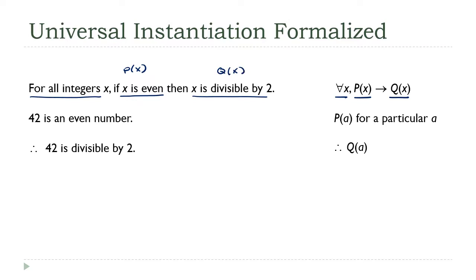Now, in the second line, we need to reference a specific value. So, if we call that a, I can rewrite this as p of a for a particular a, or a makes p true. Then our conclusion is just q of a. In other words, a also makes q true.